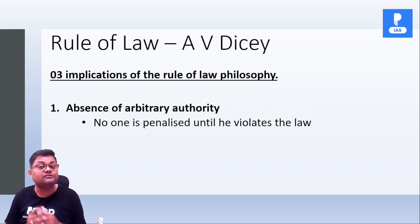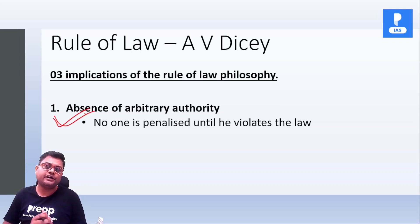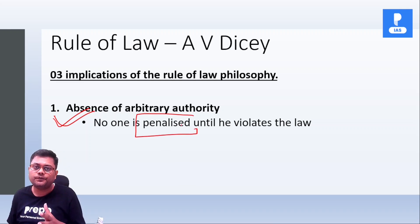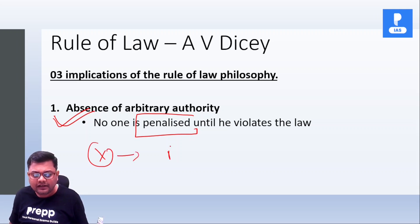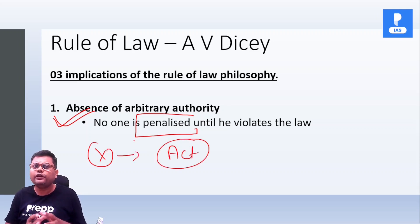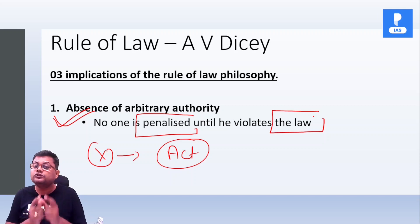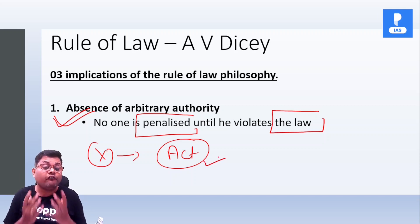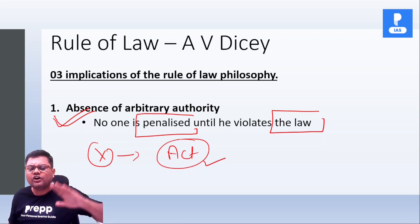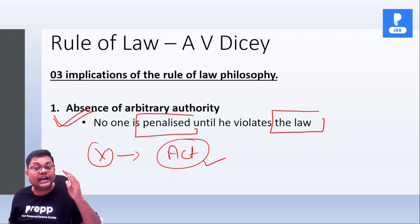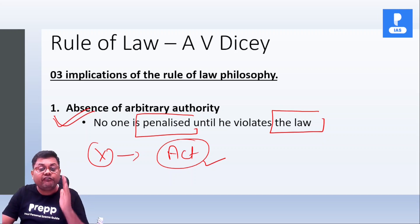And that is very important to understand this concept. The first implication is absence of arbitrary authority. Iska simple sa matlab ye hai ki no one is penalized until he violates the law. Person ne koi act kiya hai, to inko punishment tab tak nahi milegi jab tak ki there is one law available and us law mein ye activity is a punishable offense. So the objective is ki aap kisi bhi tarah se arbitrary action nahi karoge. Aapka jo action hoga, it will be based on the law. That is the first implication.